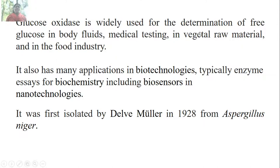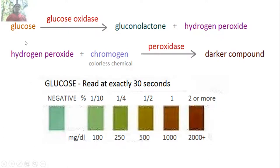Glucose oxidase is widely used for the determination of free glucose in body fluids, medical testing, vegetal raw material, and the food industry. It also has many applications in biotechnology, including biosensors and nanotechnologies. It was first isolated by Delva Muller in 1928 from Aspergillus niger. Glucose is converted into gluconolactone by glucose oxidase, and the resulting H2O2 reacts with a chromogen — a colorless chemical — via peroxidase to produce a dark-colored compound.